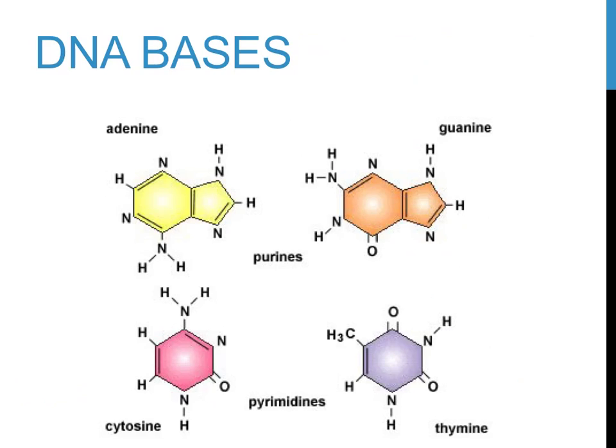I keep purines and pyrimidines straight in a couple of ways. First, the word purine is smaller than the word pyrimidine, but the size of the molecules are opposite. Second, the phrase 'pure as gold' can help you remember that purines — hence the 'pure' — are adenine, hence the 'as' (both start with an A), and guanine, hence the 'gold' (both start with a G).